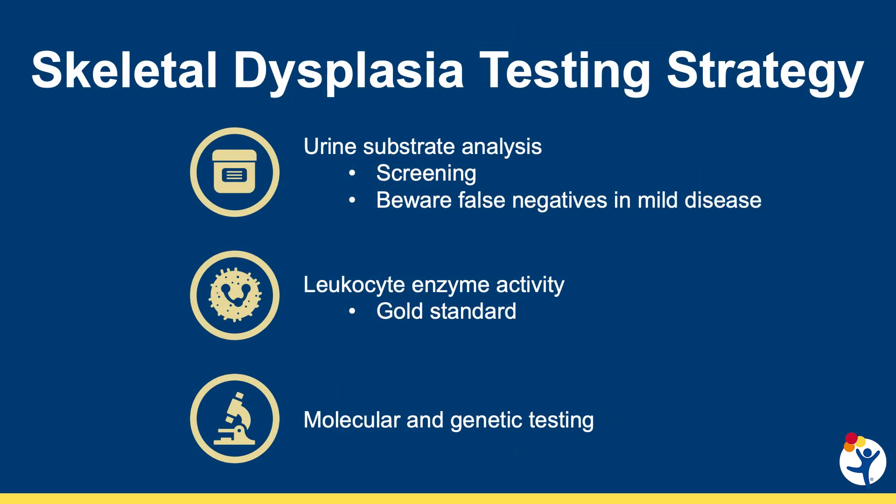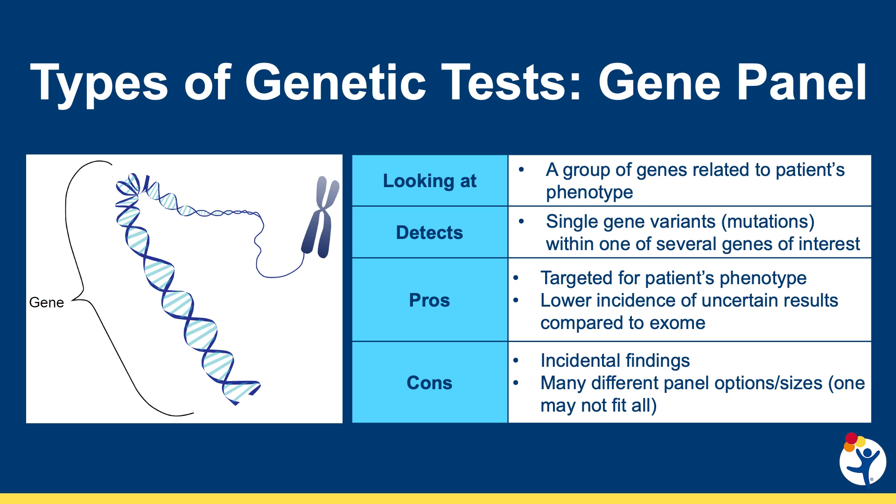Skeletal dysplasia testing strategies vary, but often one would start with a urine substrate analysis to make sure there is no glycosaminoglycan (GAG) accumulation, in order to identify a mucopolysaccharidosis. These are treatable disorders and test results can come back quickly. One must be aware of false negatives in mild forms or later-presenting disease. The workhorse of diagnostics, however, is molecular gene panel testing. Gene panels represent a diagnostic group of 10 to 100 genes representing phenotypes similar in presentation. These panels are good for picking up single gene variants while limiting uncertain results compared to exome sequencing, though incidental findings must still be addressed.